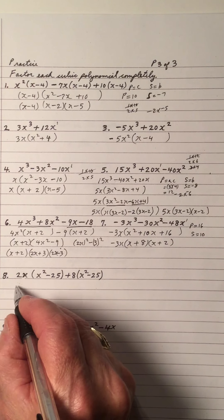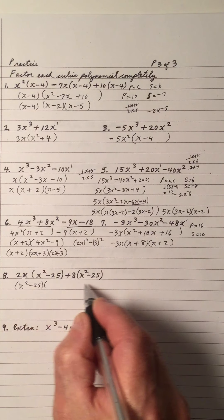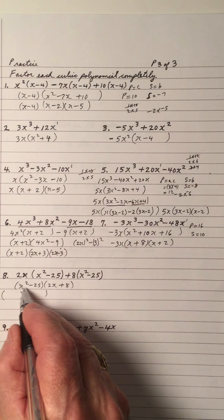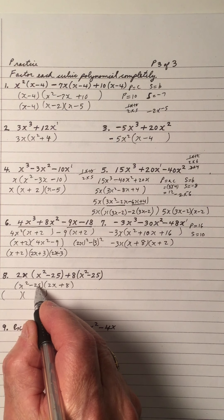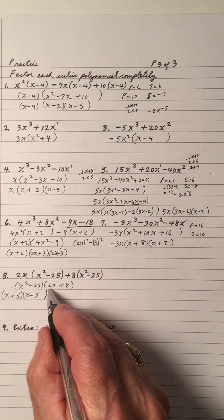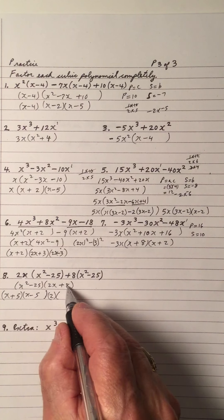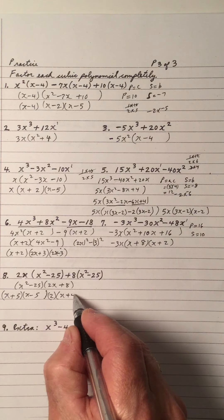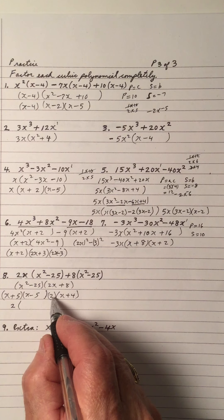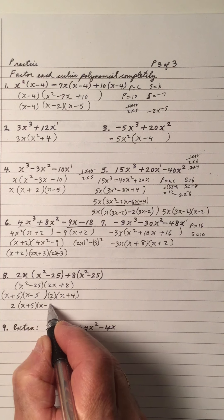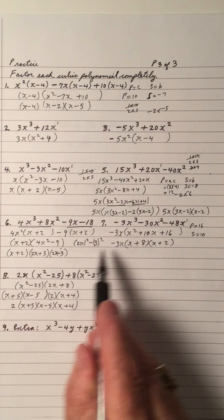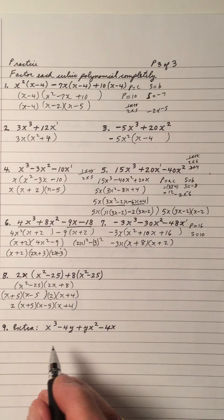Practice 8: binomial GCF is x squared minus 25. Taking it out gives 2x plus 8. x squared minus 25 is x squared minus 5 squared — the difference of two squares — so x plus 5 times x minus 5. Also notice there's a 2 common in 2x plus 8, so take out 2: x plus 4. Any number by itself goes in the front, so the 2 goes in front. Final answer: 2 times (x plus 5)(x minus 5)(x plus 4) — three linear factors, as expected for a cubic.